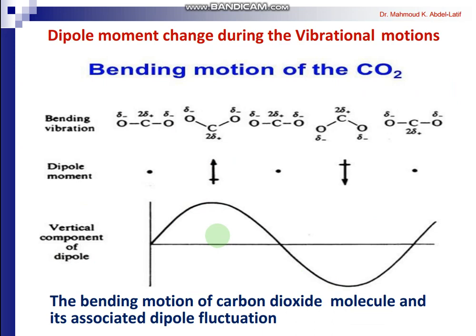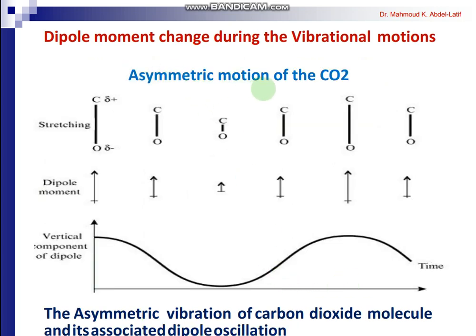This figure shows the change in the vertical component of the dipole moment during vibrational motion over time. For CO₂ there are two motions: the bending motion and the asymmetric stretching. In the bending motion, the molecule develops a dipole moment upward, then returns and develops one downward. At the end, the pattern looks like a sine wave, which has the same character as electromagnetic radiation, so it can interact with matter and give rise to spectra.